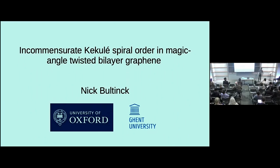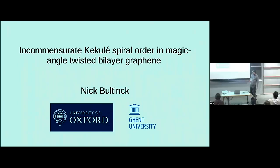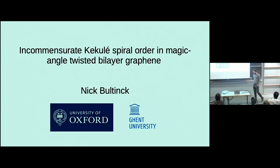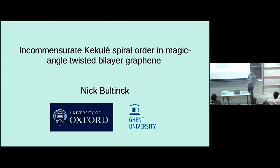All right, yeah, so first of all, thank you to the organizers for giving me the opportunity to speak here. It's very nice to be back here at K2P after a very long time. So the topic I will be talking about today is incommensurate Kekulé spiral order in magic angle graphene, which is actually some work that we already did a couple of years ago — our paper came out in 2021. And I was actually about to move on and start talking about something else, but then there were some interesting recent experimental developments which made it hard for me not to talk about it.